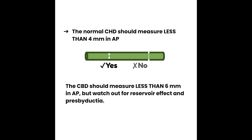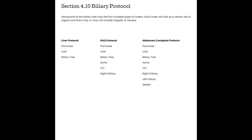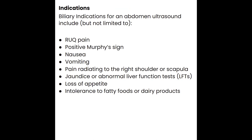To summarize the three big measurements: less than three millimeter gallbladder wall, less than four millimeter common hepatic duct, and on average less than six millimeter common bile duct — though up to 10 millimeters can be normal depending on cholecystectomy status or age. Section 4.10, the biliary protocol. The biliary tree should be examined with most abdominal exams — during liver protocol, right upper quadrant protocol, and abdomen complete protocol. It is one of the main reasons ultrasound exams are performed, given the many acute indications for biliary pathology.